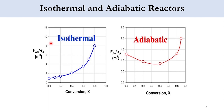Before going to that, we will first review the isothermal and adiabatic reactor trends. For isothermal systems, with the increase in conversion the value of FA0 over (-rA) increases, and for such systems we prefer PFR over CSTRs. In the adiabatic system, the value of FA0 over (-rA) first decreases and then increases — the rate of reaction initially is higher but decreases as conversion increases.